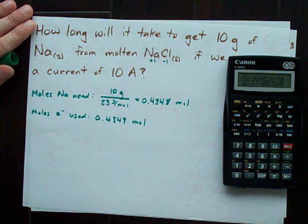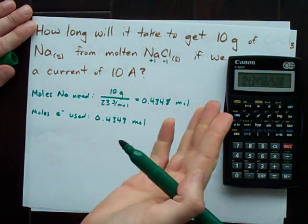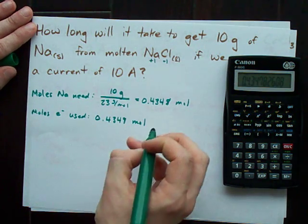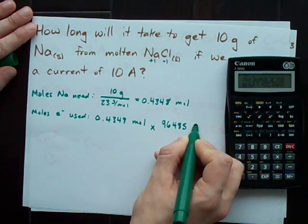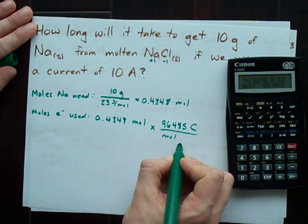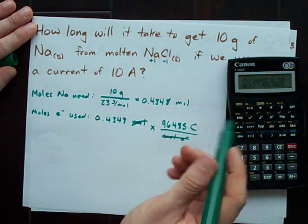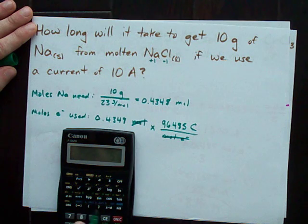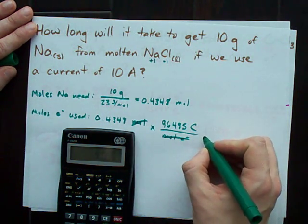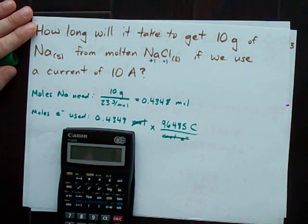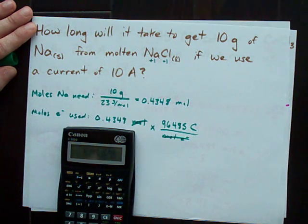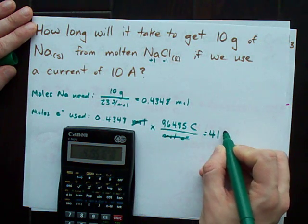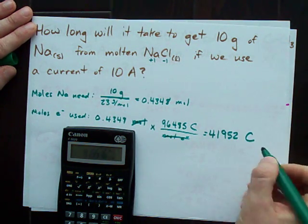So, now we have the number of moles of electrons that we need, we can convert that to a number of coulombs knowing that there are 96,485 coulombs in every mole of electrons. Moles cancels out. We're left with coulombs times 96,485, which gives me 0.4348 times 96,485, 41,952 coulombs.